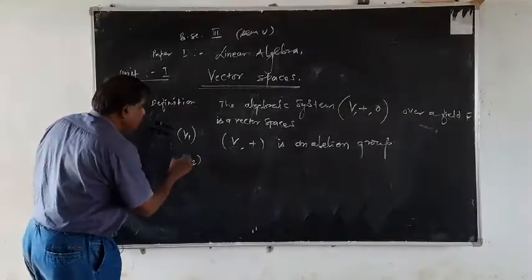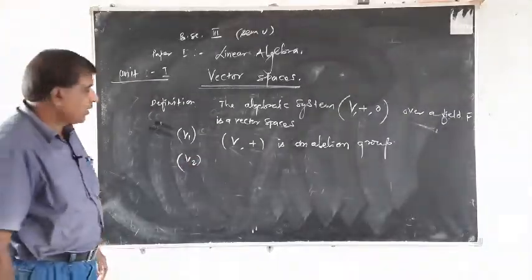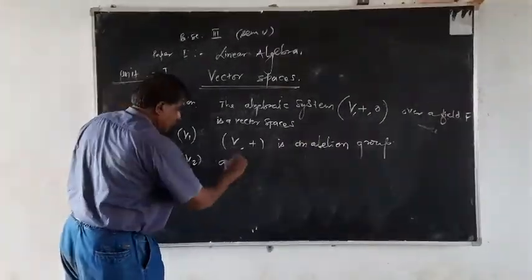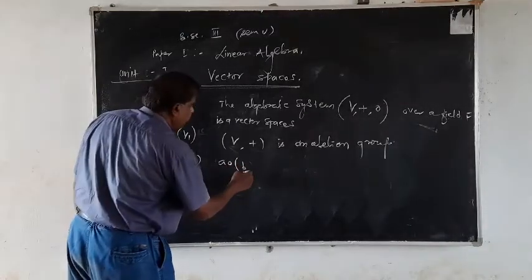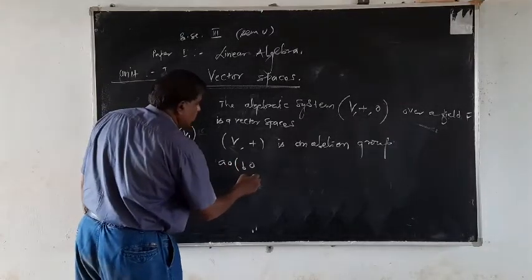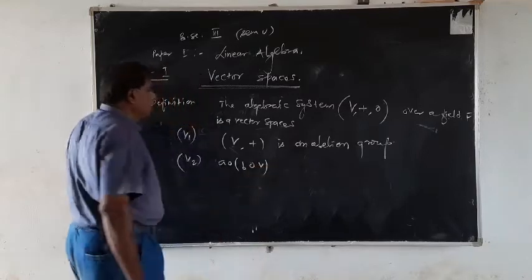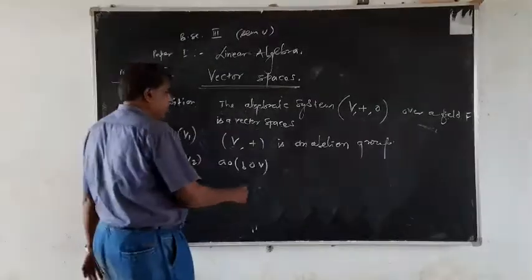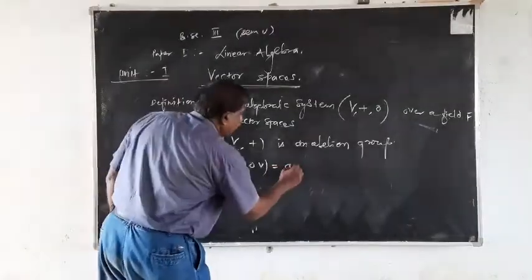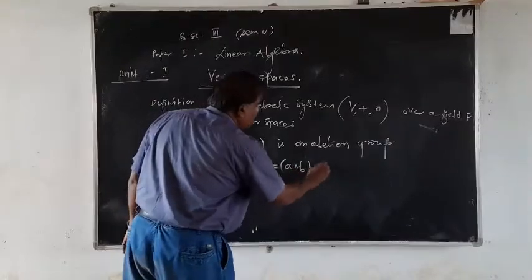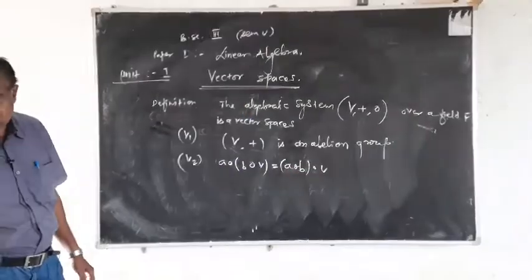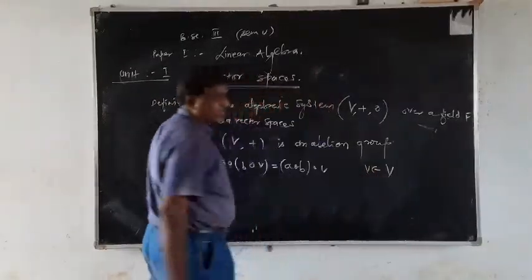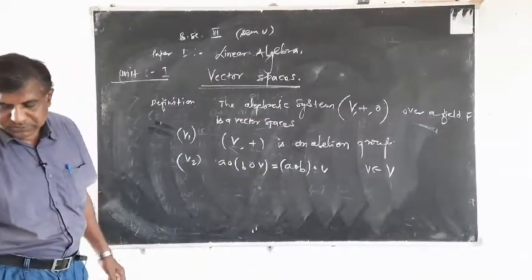An abelian group means it has all properties of a group along with the property of commutativity. The second property, V2: A·(B·V) = (A·B)·V, which satisfies the property of associativity for all V belonging to the vector space V.